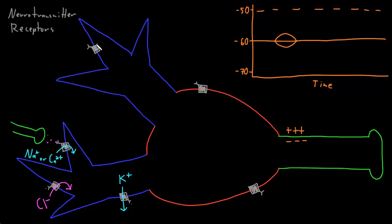Let's look at one of these channels more closely. Consider a sodium channel — when neurotransmitter binds and the channel opens, it only allows sodium ions to flow into the neuron. As sodium ions flow through the open channel, there will be an increased concentration of sodium in a small area right around the channel. As these positive charges build up on the inside of the membrane around the channel, that's depolarizing this part of the membrane, and we see the membrane potential start to move to a less negative value.